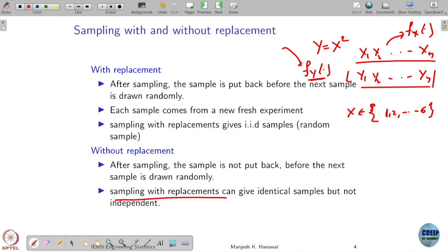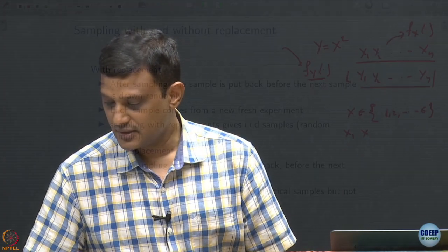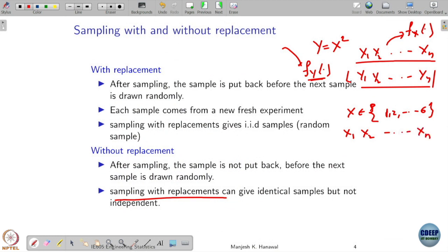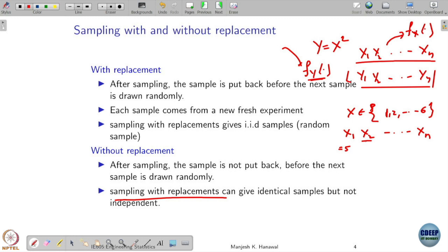Consider the experiment of throwing a die, which gives six outcomes. Say I repeat this experiment 10 times. The first time I got x1 equals 5 — the probability of getting 5 is 1/6 because all outcomes are present. I use the same die again and get a value 4, also with probability 1/6. So repeatedly using the same die is sampling with replacement — the PMF is always 1/6, which is uniform.